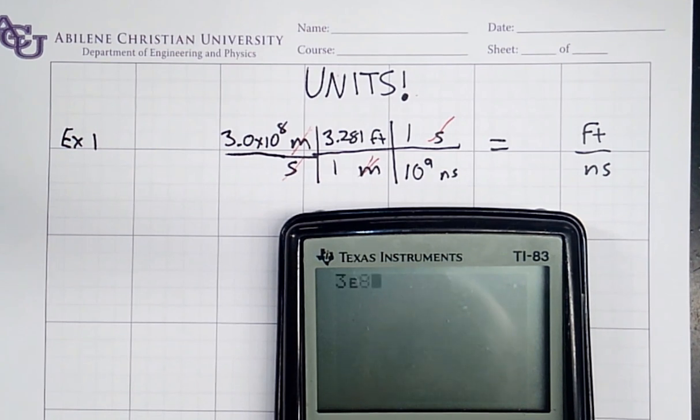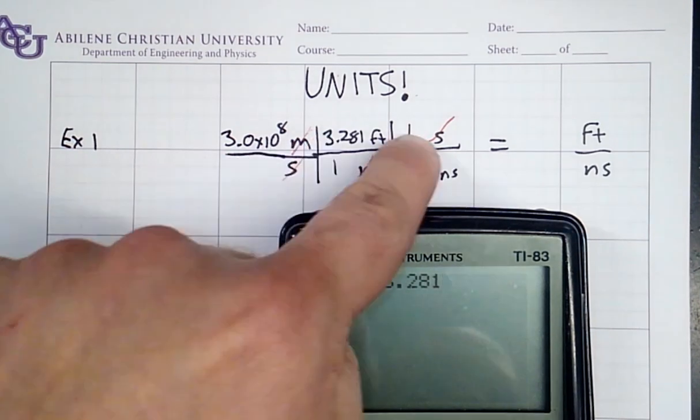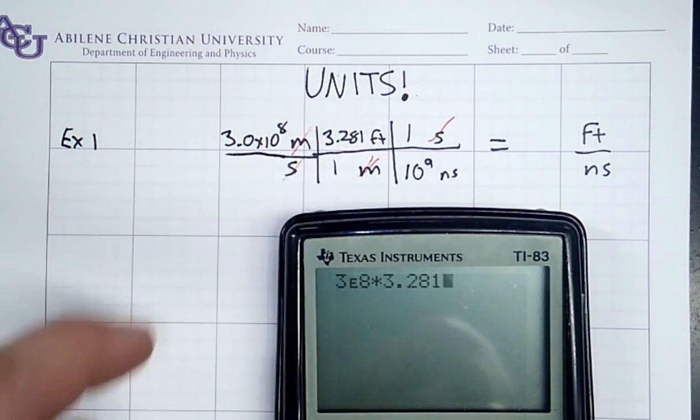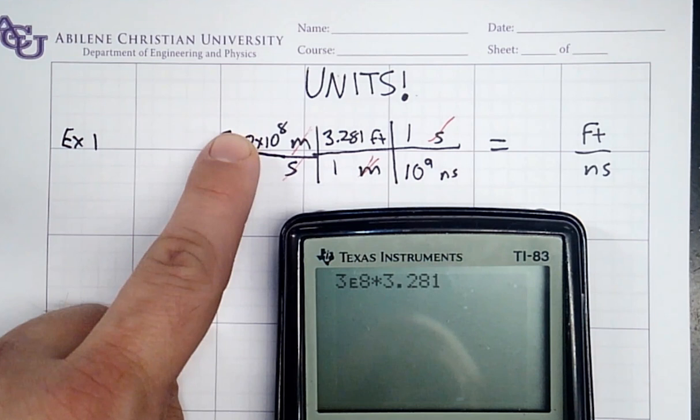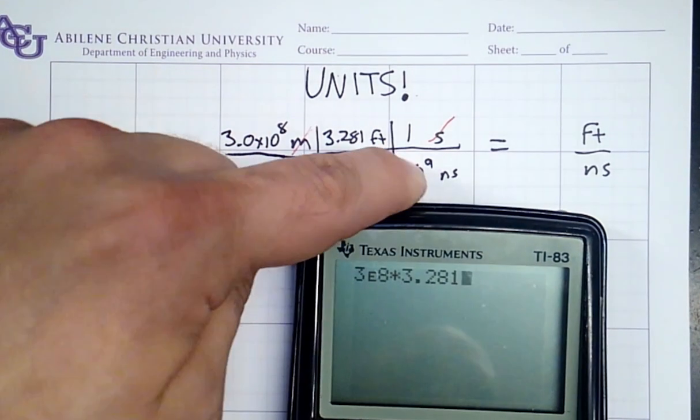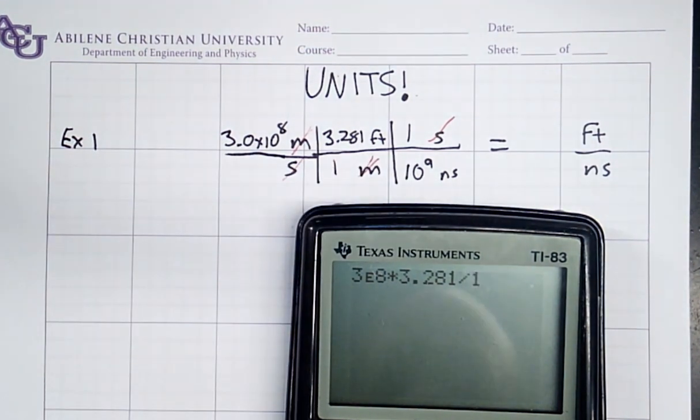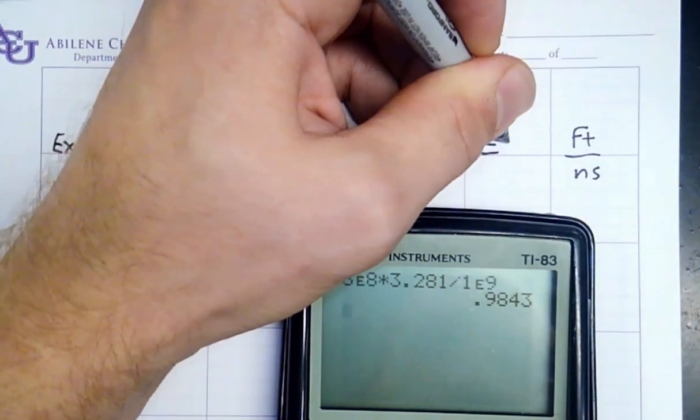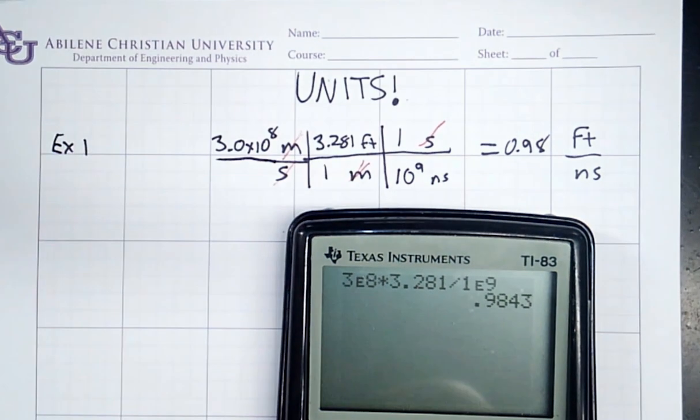3 times 10 to the eighth times 3.281. I'm going to be multiplying everything in the numerator and dividing everything in the denominator. Divided by 10 to the ninth. And what I get is 0.98 feet per nanosecond. So, the speed of light is almost exactly one foot per nanosecond. That's a really useful thing that I like my students to know.